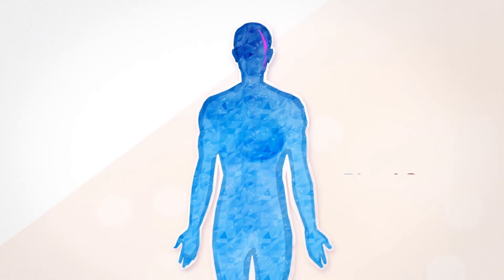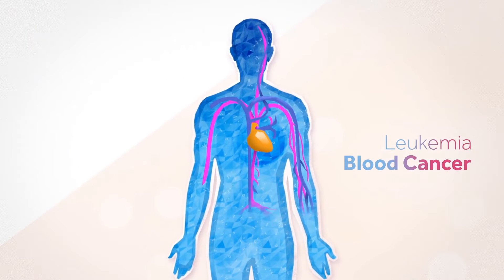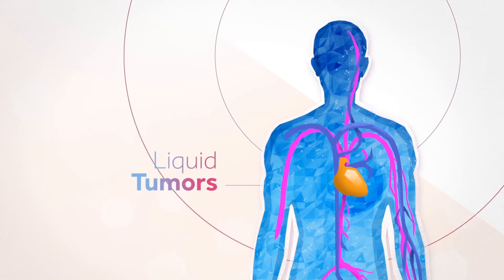Some cancers like leukemia, a blood cancer, do not form masses and are therefore called liquid tumors.